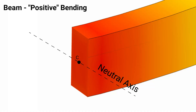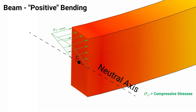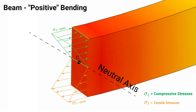Above the neutral axis, we will have compressive stresses for positive bending. These will be zero at the neutral axis and maximized at the very top extreme compression fiber. For the tensile stresses, they will also be zero at the neutral axis and maximized at the very bottom tensile fiber.